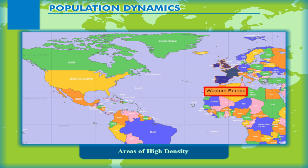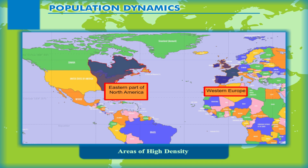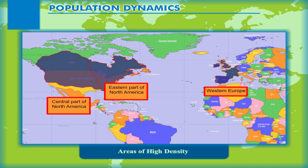The countries of Western Europe and the eastern and central part of North America are also densely populated, as they have achieved a high level of industrialisation and are able to support large production.